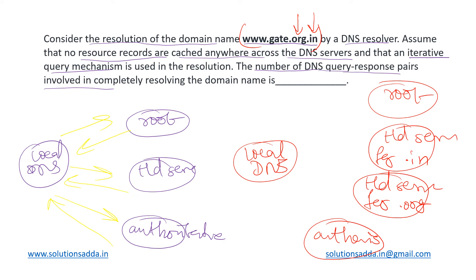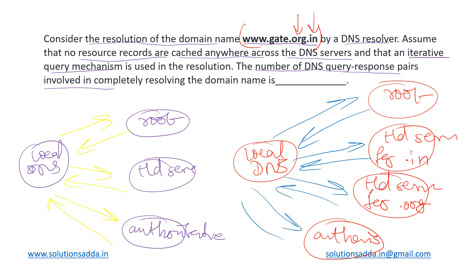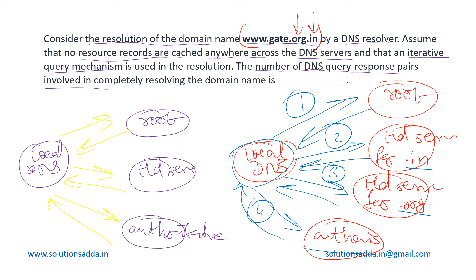In the iterative approach: first we send to the root and get a response, then resolve .in and come back, then resolve .org via the second TLD server and come back, and finally go to the authoritative server and return with the resolved address. So the pairs are: one for root, two for .in, three for .org, and four for the authoritative server — four request-response pairs in total.